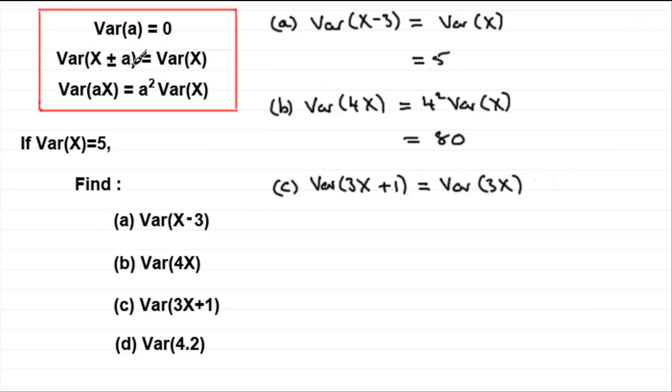Because, whatever constant we have here, whether it be plus or minus, we just drop it, and it just becomes the variance of our random variable. And our random variable is 3X.